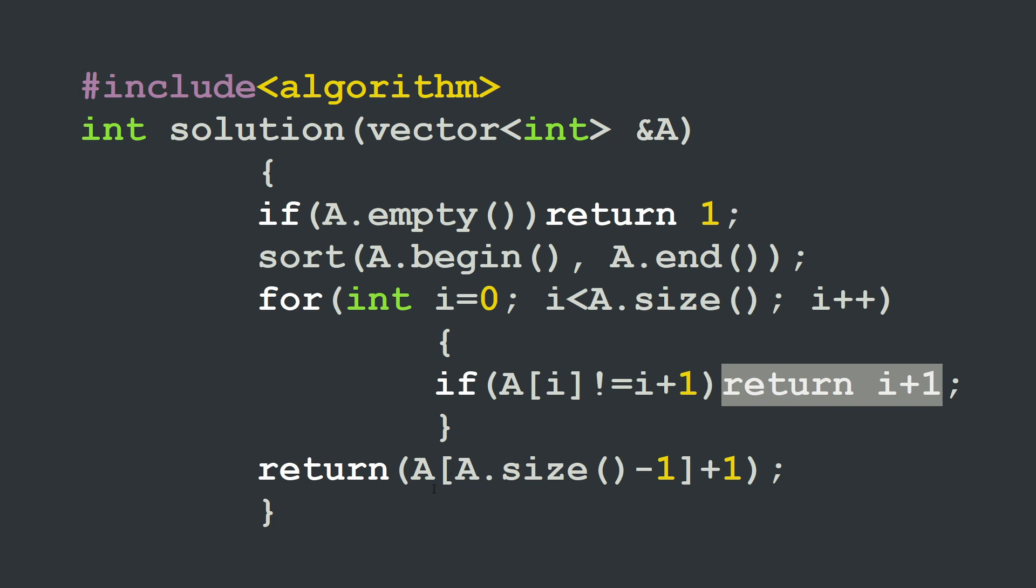And that's what we are returning here in the last line: return A with index A.size minus 1. This is the index of the last element of the array, and then I will add 1 to its value.